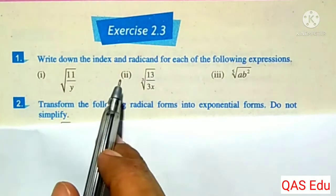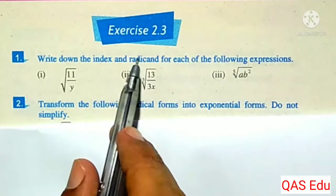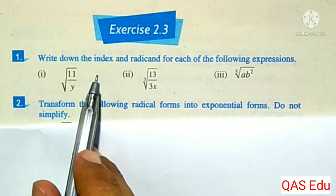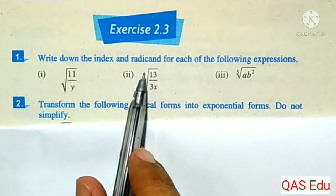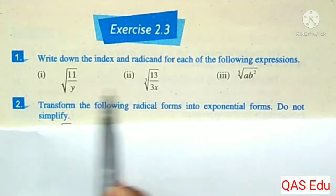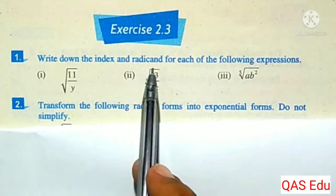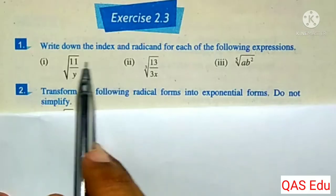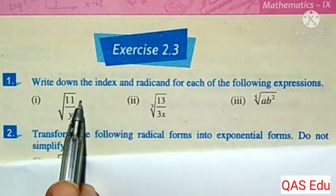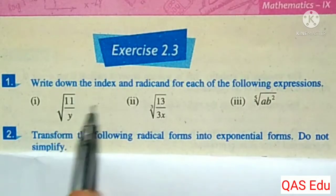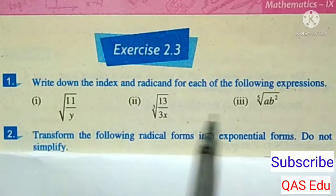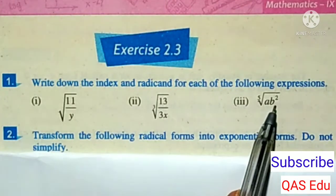Bismillahirrahmanirrahim. Exercise 2.39, Class Maths. Write down the index and radicand for each of the following expressions. The three expressions include: index, radicand, radical sign. The radicand values given are 11 over y, 13 over 3x, and ab squared.